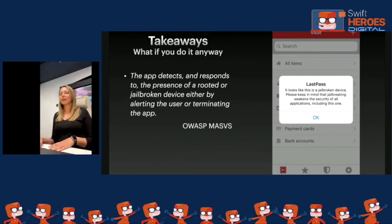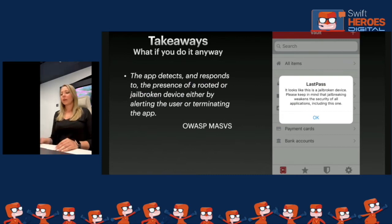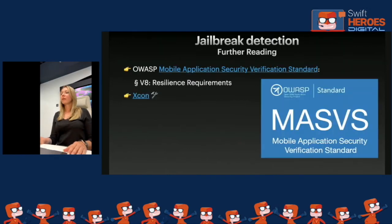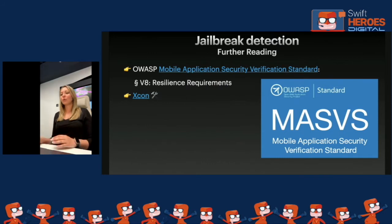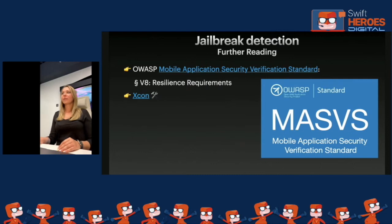OWASP has a recommendation for app behavior when jailbreak is detected: show an alert or terminate the app. We are going to talk about OWASP standards in more detail later. For further reading, the first thing to check out is the OWASP Mobile Application Security Verification Standard (MASVS) — specifically Chapter 8, Resilience Requirements. Also check out XCON, the tool I mentioned that confuses apps checking specific paths.